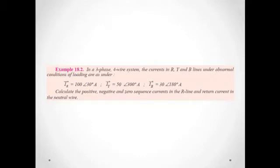This is our first example. We have a three-phase four-wire system. The current in the red, yellow, and blue lines under abnormal conditions are: IR = 100 at 30°, IY = 50 at 300°, and IB = 30 at 160°. We have to calculate the positive, negative, and zero sequence currents in the red line, and then the return current in the neutral wire.